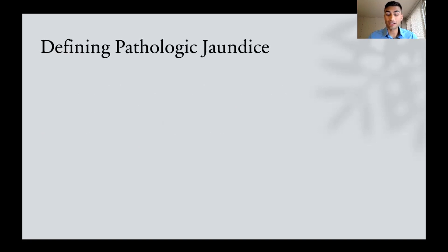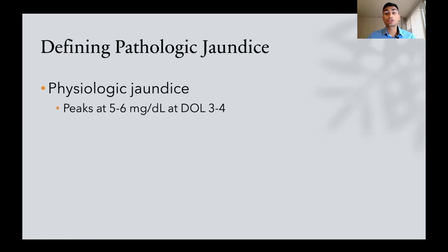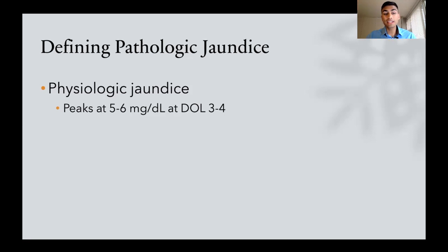So first, let's define pathologic jaundice. There is a thing called physiologic jaundice — if you want to learn what causes this, you can check out this video right here. Physiologic jaundice peaks around levels of five to six milligrams per deciliter of bilirubin at day of life three to four. It is fairly common, but it's a result of physiologic processes and shouldn't be concerning.